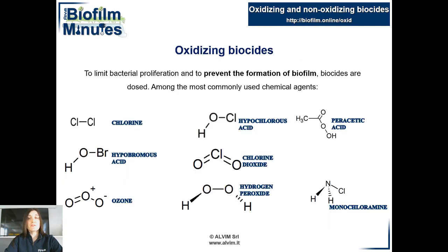The most common oxidizing biocides are compounds based on chlorine and bromine, ozone, hydrogen peroxide, and peracetic acid. A treatment with oxidizing biocides increases the value of the oxidation-reduction potential (ORP) of the system, a parameter that Alvim sensors are able to detect, thus allowing verification of the correct dosage and distribution of the biocides in the system.